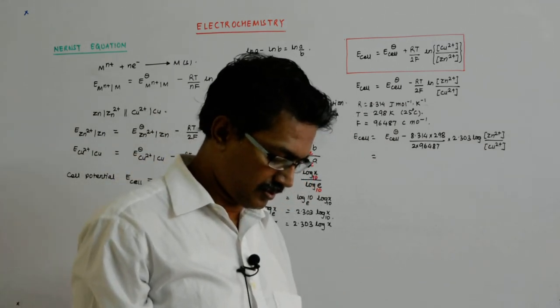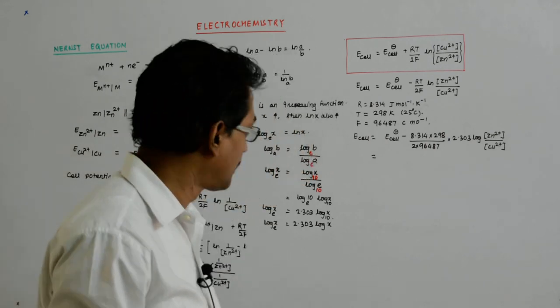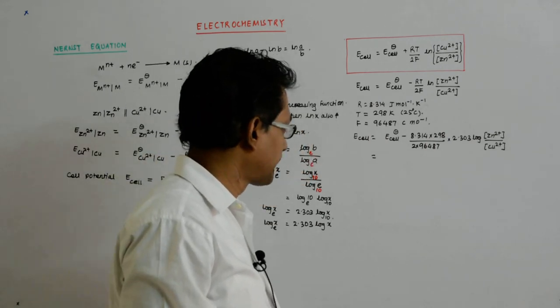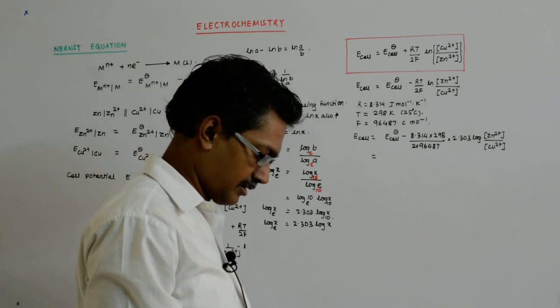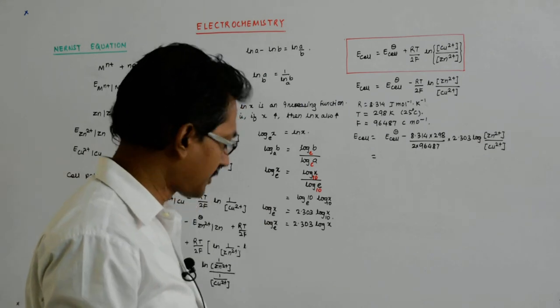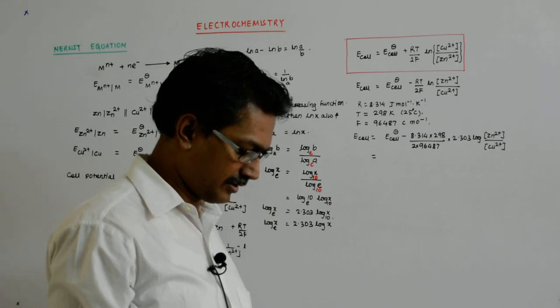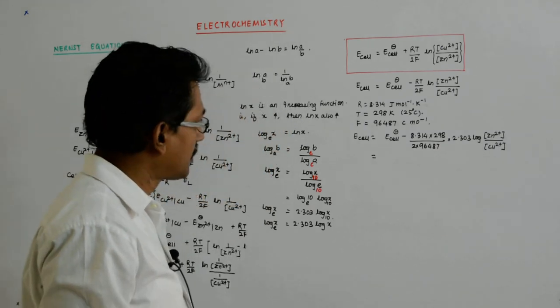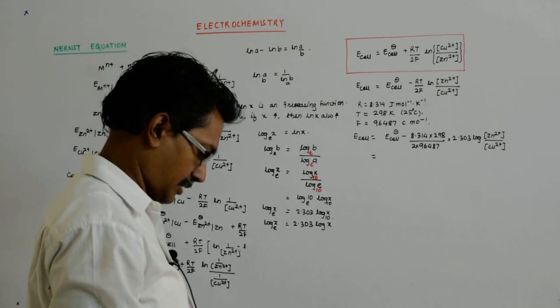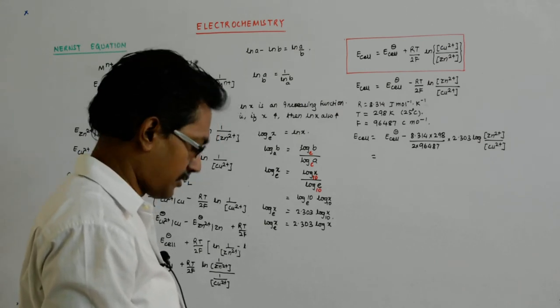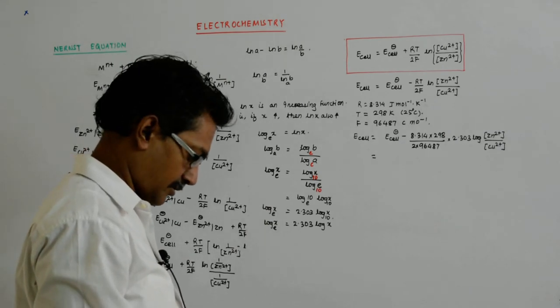I have 8.314 into 298 into 2.303 divided by 96487... 8.314 into 298 into 2.303 divided by 96487.